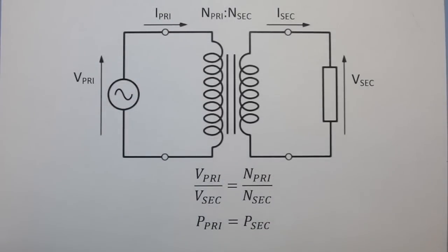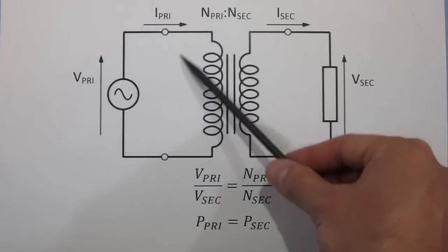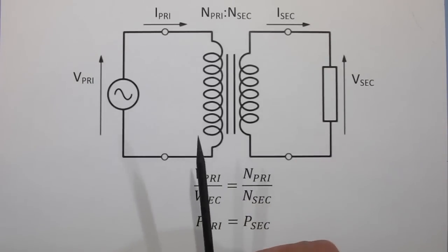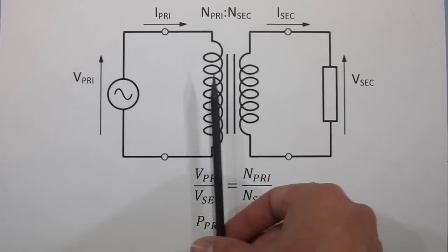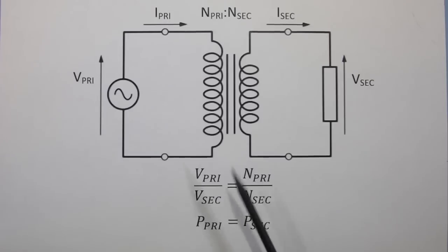I'm not intending this to be a lecture or course on magnetics, but I thought I'd just reintroduce the basics of the transformer to you. Here we have the schematic symbol for the transformer, and in this instance it consists of two windings wound around a ferromagnetic core.